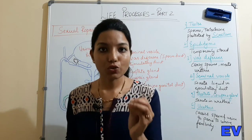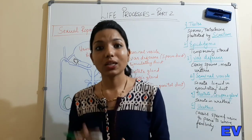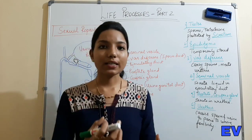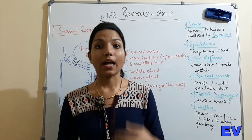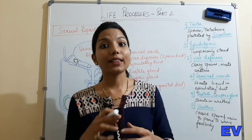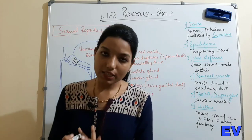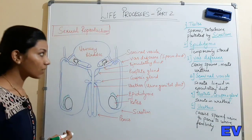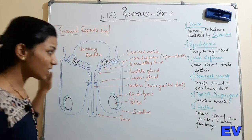Now we will study how sperm is produced, how it moves, how it comes out in males, and how ovum is produced in females. After that we will study the second step - fertilization. Let's look at the male reproductive system.